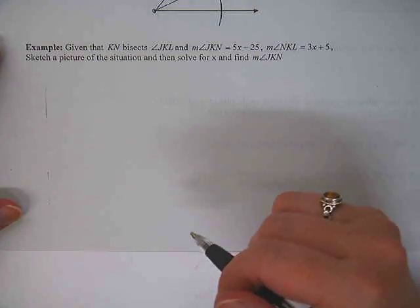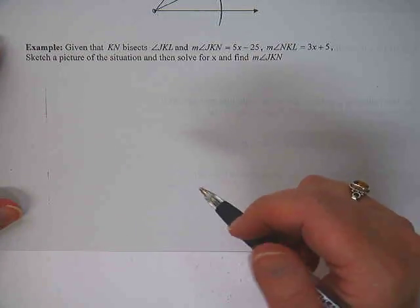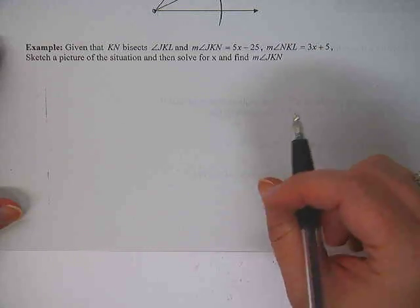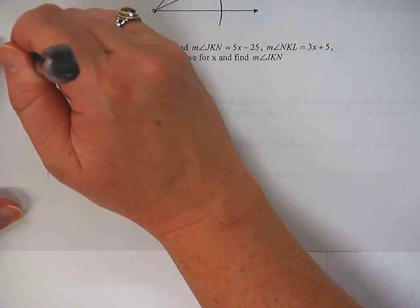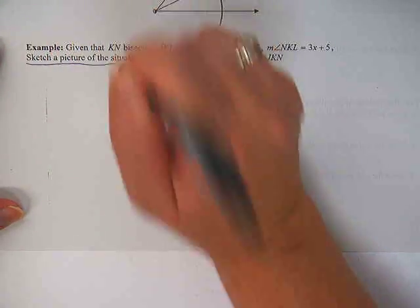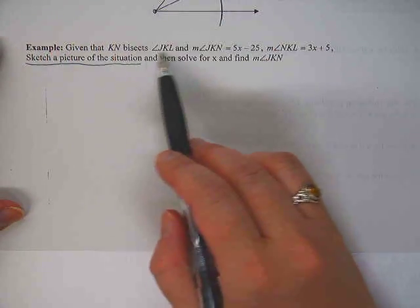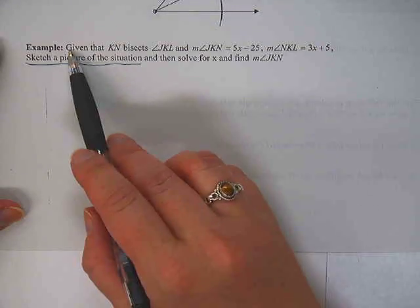Let's do a problem that involves algebra with an angle bisector. The first thing I always do when I'm doing a problem like this is to sketch a picture. And it does tell me to do that. Sketch a picture of the situation.